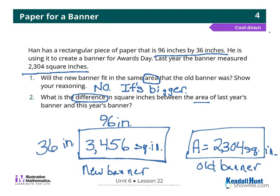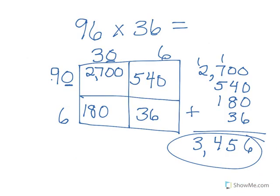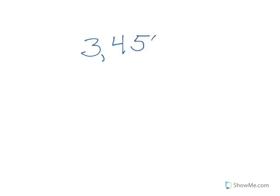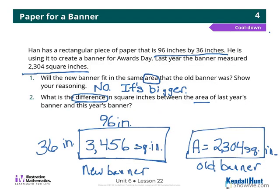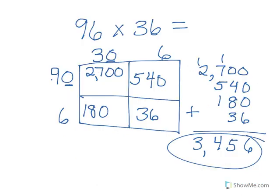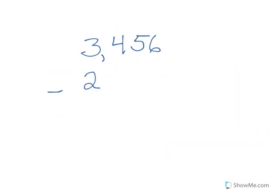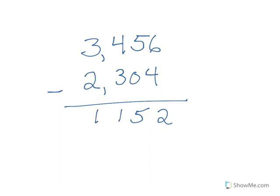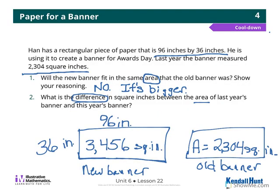What is the difference? I have to subtract now. So, 3,456 minus 2,304. 6 minus 4 is 2, 5 minus 0 is 5, 4 minus 3 is 1. The answer is 1,152 square inches. Label your answer. Remember, difference means subtract.